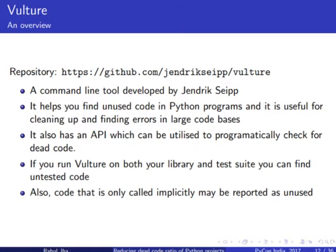There are also cases of subclassing — for example, if you want certain utility not to be used, you make a function with the same name as defined in the super class and then do a pass, so that function cannot be used. It would be identified as dead code by Vulture because technically it is dead, but you need it to be there. It doesn't contribute to the control flow of your program, but it has to be there for the logic. For those cases, we can use the API, which can programmatically check for dead code. You can implement custom filters for them.